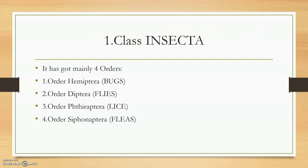Moving to class Insecta, it has got mainly four orders. You have to be very vigilant whenever we are talking about the orders, suborders, and all. Order 1 is Hemiptera, which is composed of bugs and bedbugs.